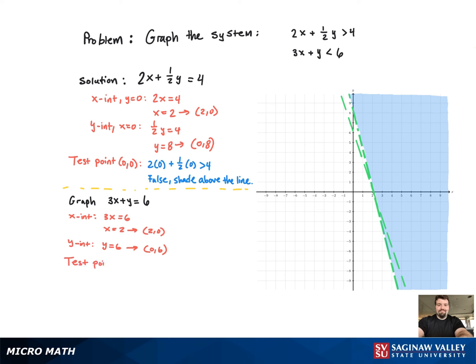We're going to use a test point for this as well, 0, 0. And when we plug that in, we get 0 less than 6. Which 0 is less than 6, it's true. So we'll shade below the line. And now we can see that the feasible region is going to be the overlapped purple region there.